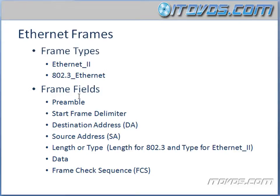Now let's talk about the frame fields. The first field is going to be a preamble. This is just going to be an alternating 1-0-1-0-1-0 — alternating bits — so that the receiver of this frame can lock on to a clock rate of 5 MHz. And then there's a start frame delimiter that ends with a 11, which basically lets the receiver know that we're going to start our frame here, because the preamble is 101010 and then comes the start frame delimiter which ends in 11 — two 1's in a row — meaning now we're going to start our frame.